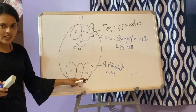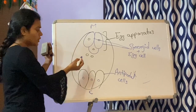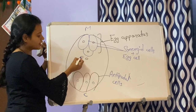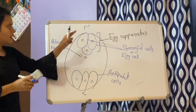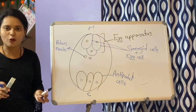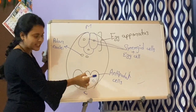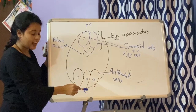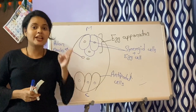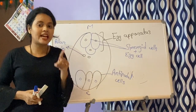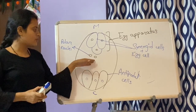The two nuclei which are not getting cell walls remain in the main central cell, and these two nuclei are termed polar nuclei. So the embryo sac has seven cells but eight nuclei — six cells with cell walls (three antipodal cells, two synergid cells, one egg cell) plus one central cell containing two polar nuclei. That gives seven cells and eight nuclei total.